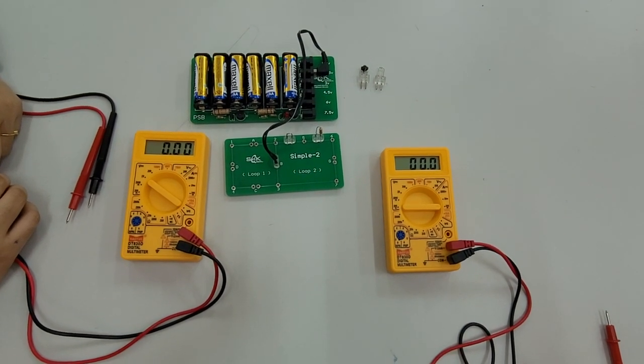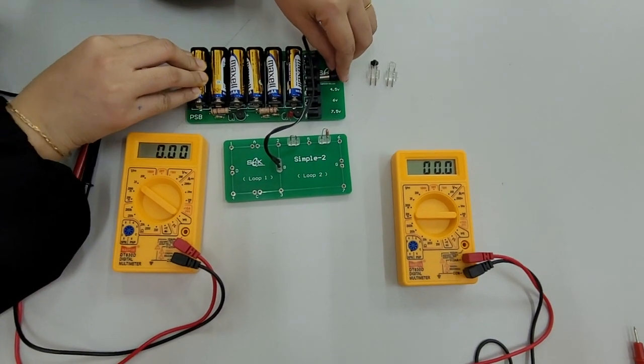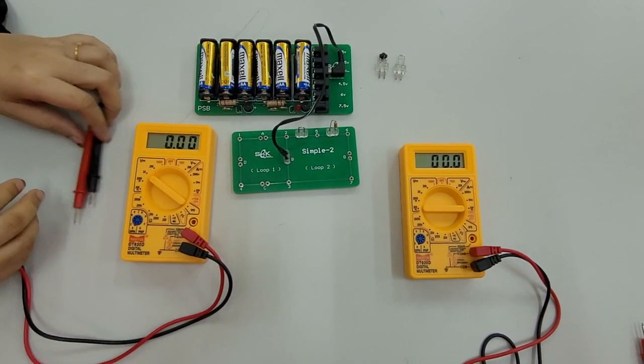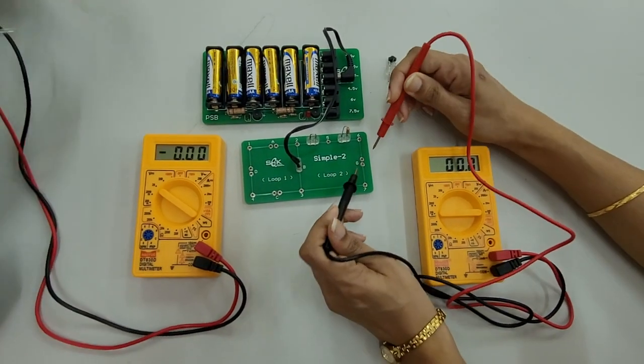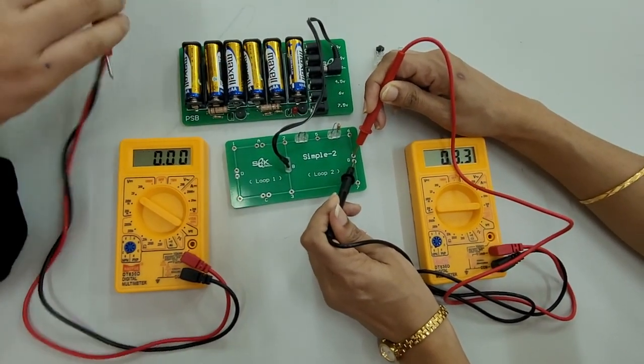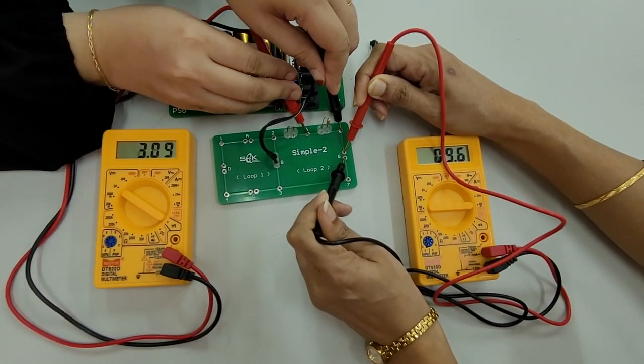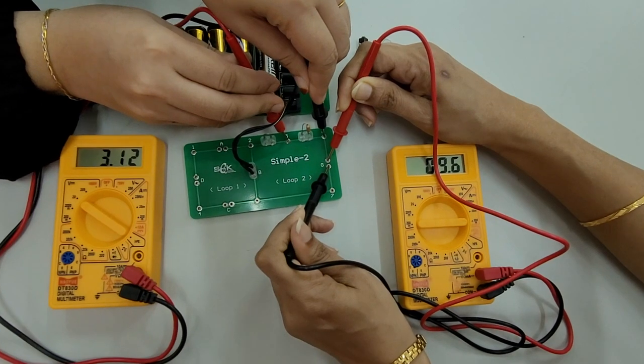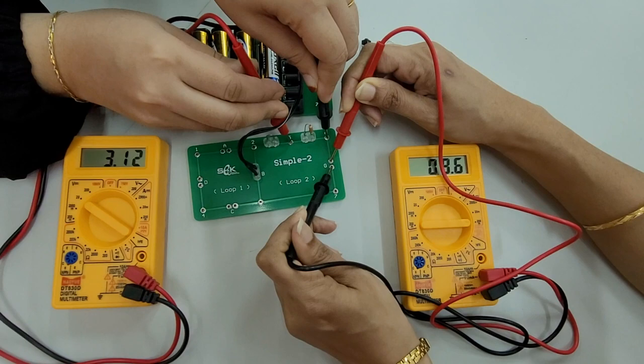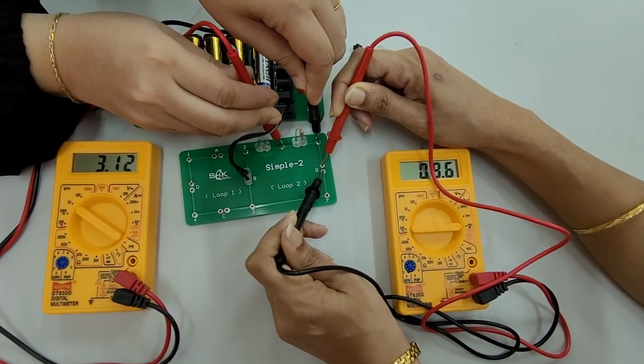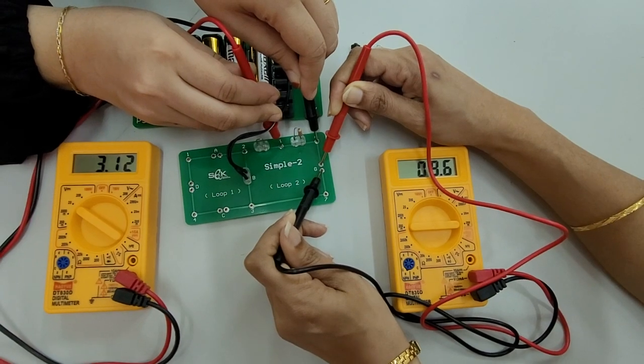Now set the voltage in the PCB at 3 volts and observe your readings in the digital multimeter for ammeter reading and voltmeter reading. The multimeter shows a reading of 9.6 mA and the voltmeter shows a reading of 3.12 volts.